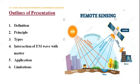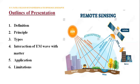The fourth key point is the interaction of electromagnetic waves with matter. Fifth is the applications of remote sensing in civil engineering. And sixth is the limitations of remote sensing.